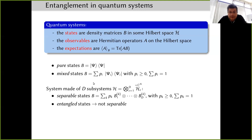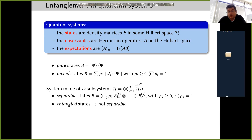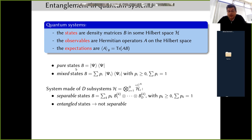States can be separable — separable states are convex combinations of tensor products of one density matrix per subsystem — or they can be called entangled, which is everything that is not separable.